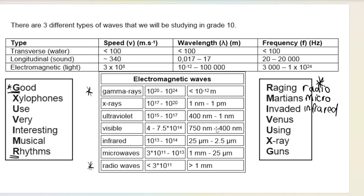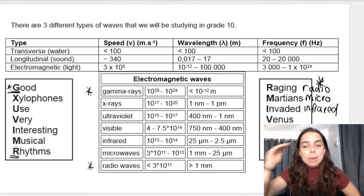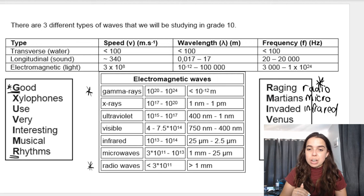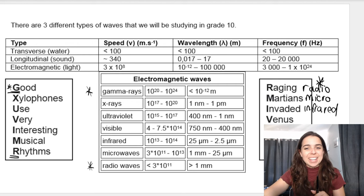These waves are not ordered randomly. They are placed in that order because going from gamma rays down to radio waves represents decreasing frequency or increasing wavelength.